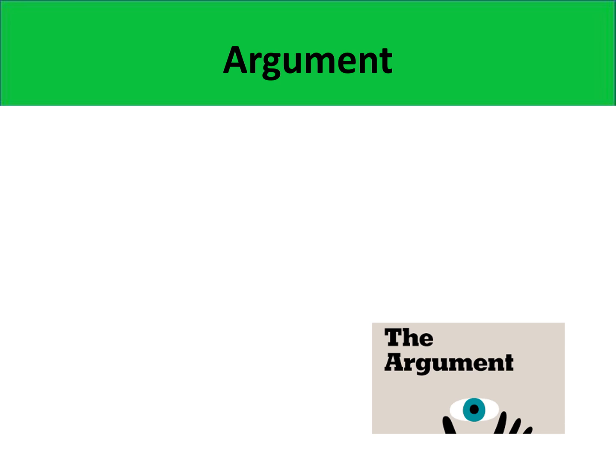If an argument has n premises, we write it as follows. In sequence, we have premise 1, premise 2, and so on and so forth until premise n. And then the premises are followed by the conclusion Q.